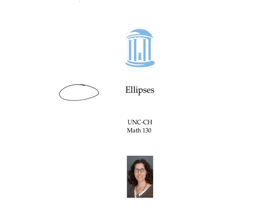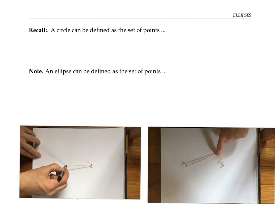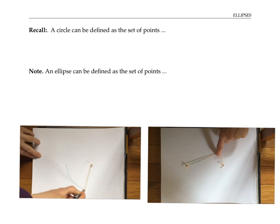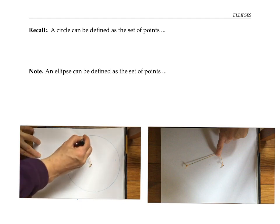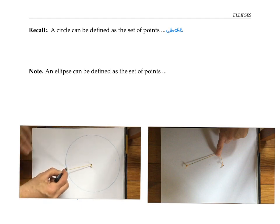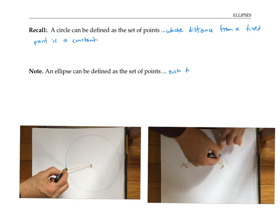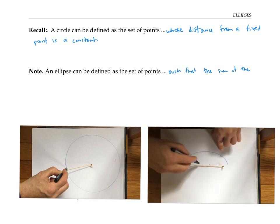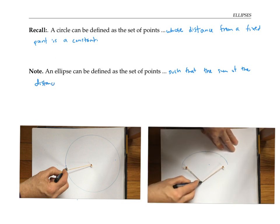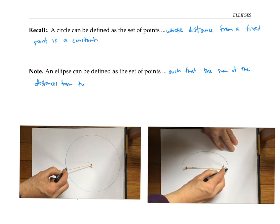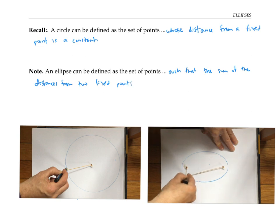This video is about ellipses. Recall that a circle can be defined as a set of points whose distance from a fixed point is a constant. An ellipse can be defined as a set of points such that the sum of the distances from two fixed points is a constant.